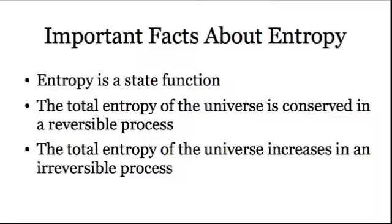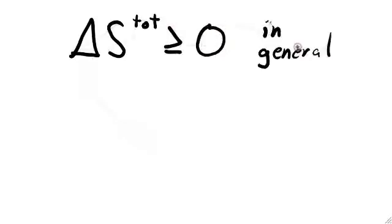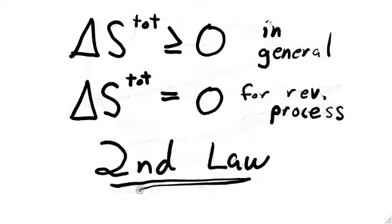In an irreversible process, the total entropy will increase. These rules about the change in total entropy comprise the second law of thermodynamics, which is true for all systems and all processes.